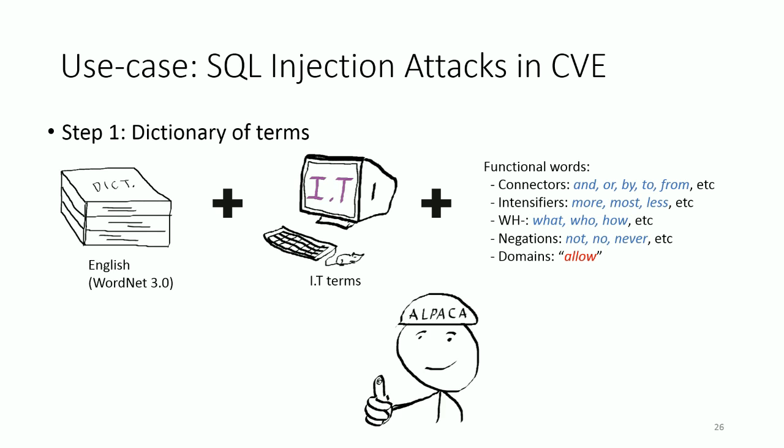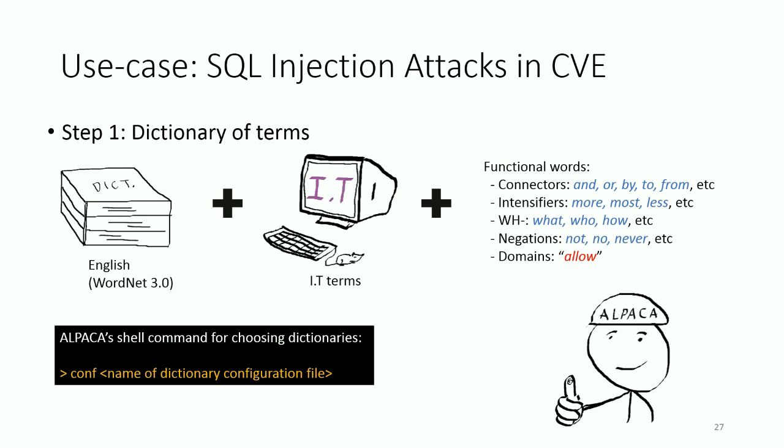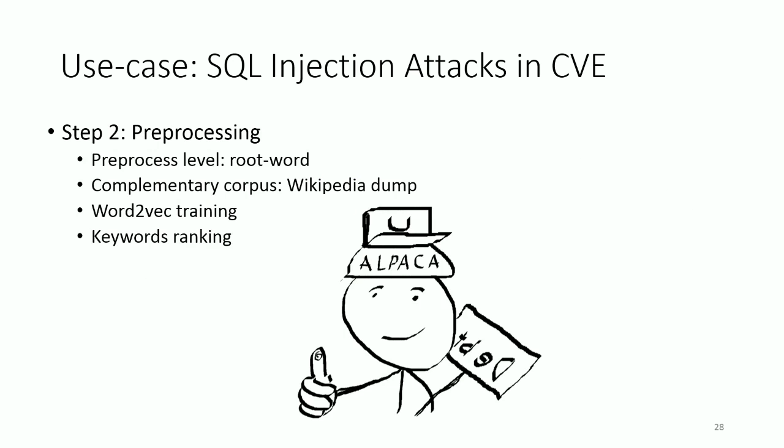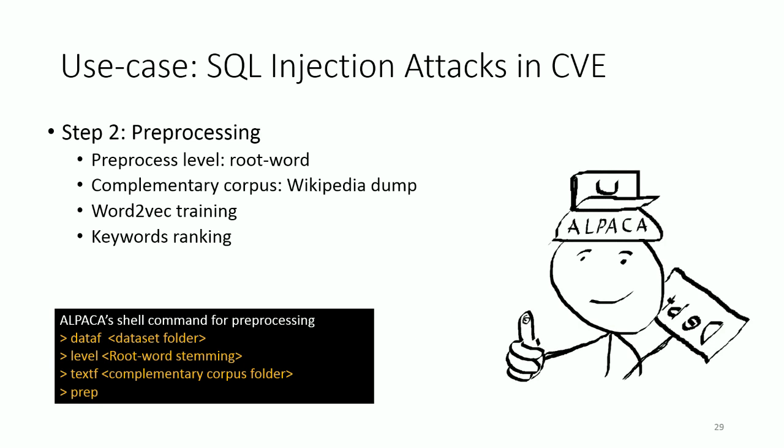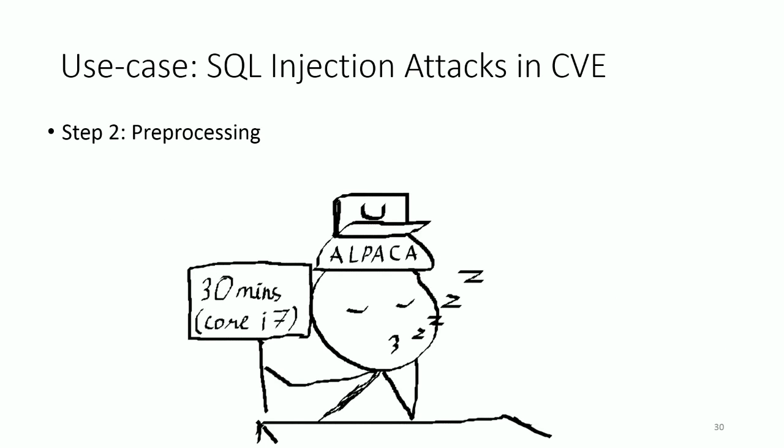In this case, from observation of the data, we can add the word "allowed" to this list. The next step is to preprocess the data. We choose to reduce the text to root words, because previous studies have suggested that root words can offer more meaning than their over-stemmed versions. The preprocessed text is then combined with a Wikipedia corpus for word2vec training, and finally its keywords are ranked. This took about 30 minutes on our Core i7 laptop.